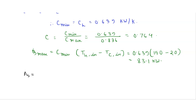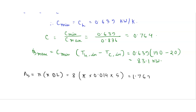The heat transfer surface area A_s equals n times pi times d times l, where n is the number of tubes, d is the diameter of the tube, and l is the length. Here n is 8, multiplied by pi, multiplied by diameter 0.014 meter, multiplied by length 5 meter. After solving this we get heat transfer surface area of 1.76 meter squared.